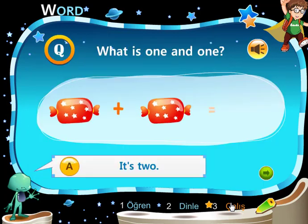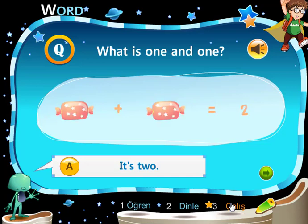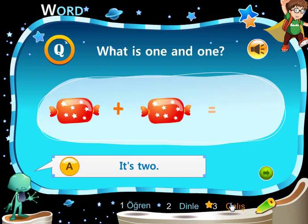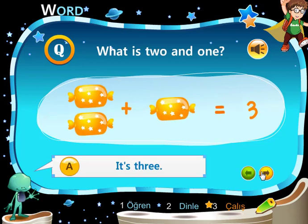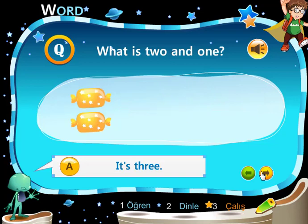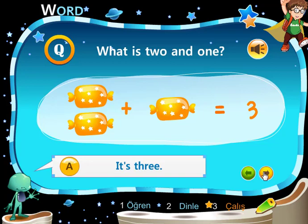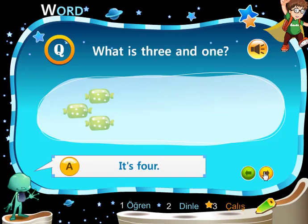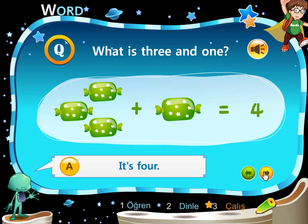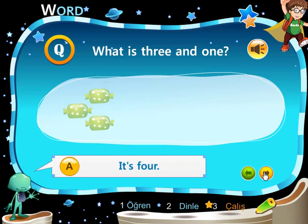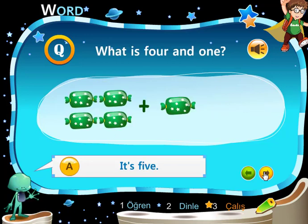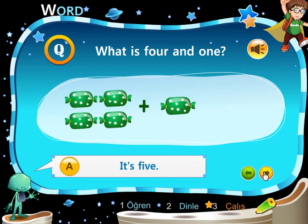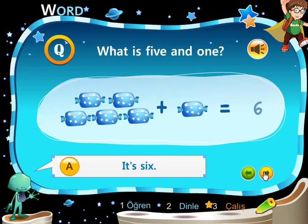What is 1 and 1? It's 2. What is 2 and 1? It's 3. What is 3 and 1? It's 4. What is 4 and 1? It's 5. What is 5 and 1? It's 6.